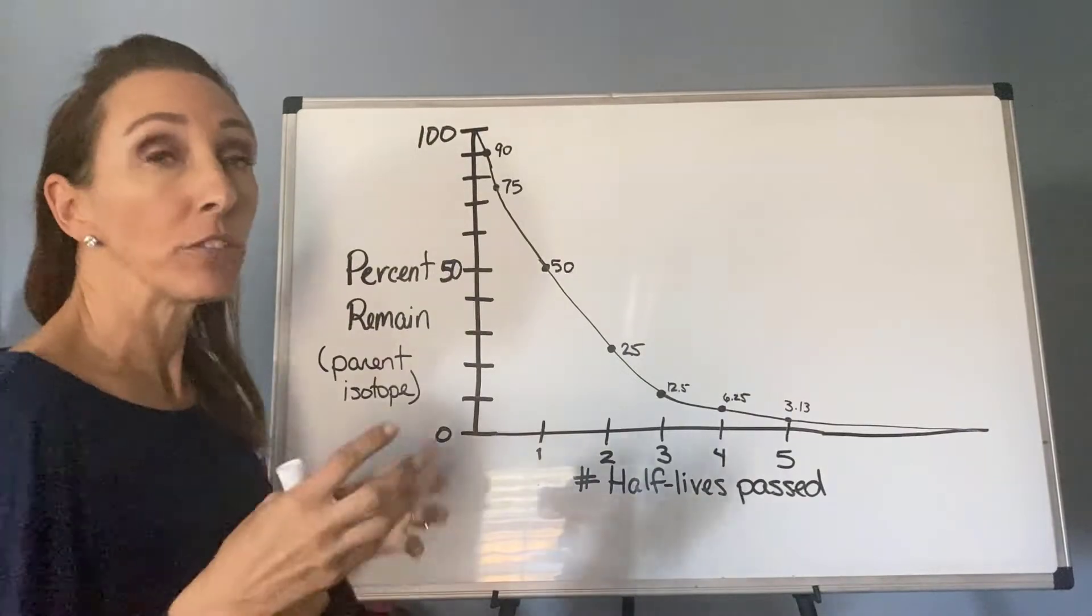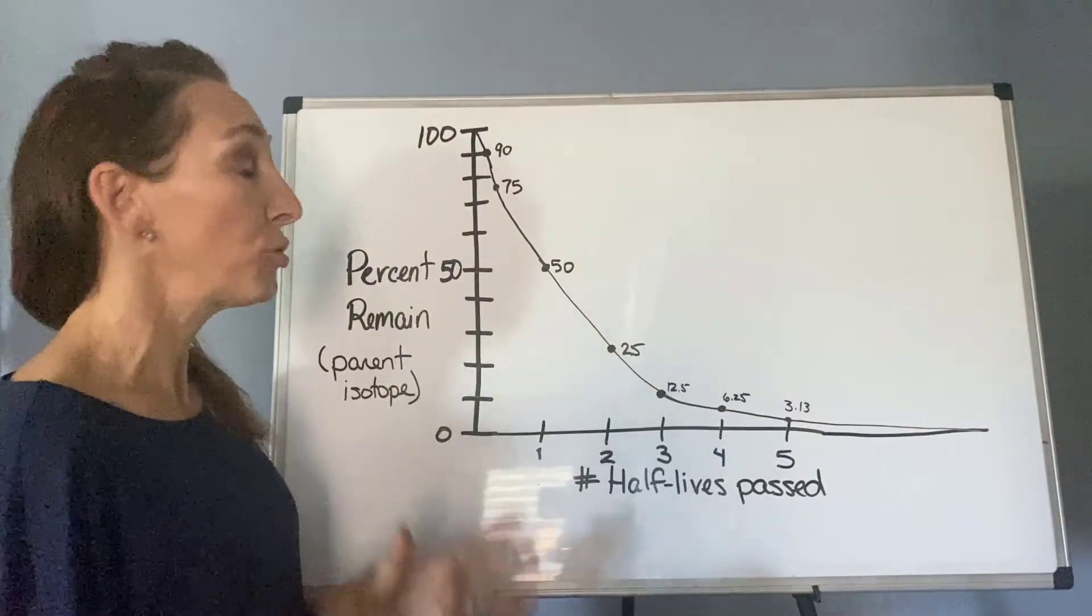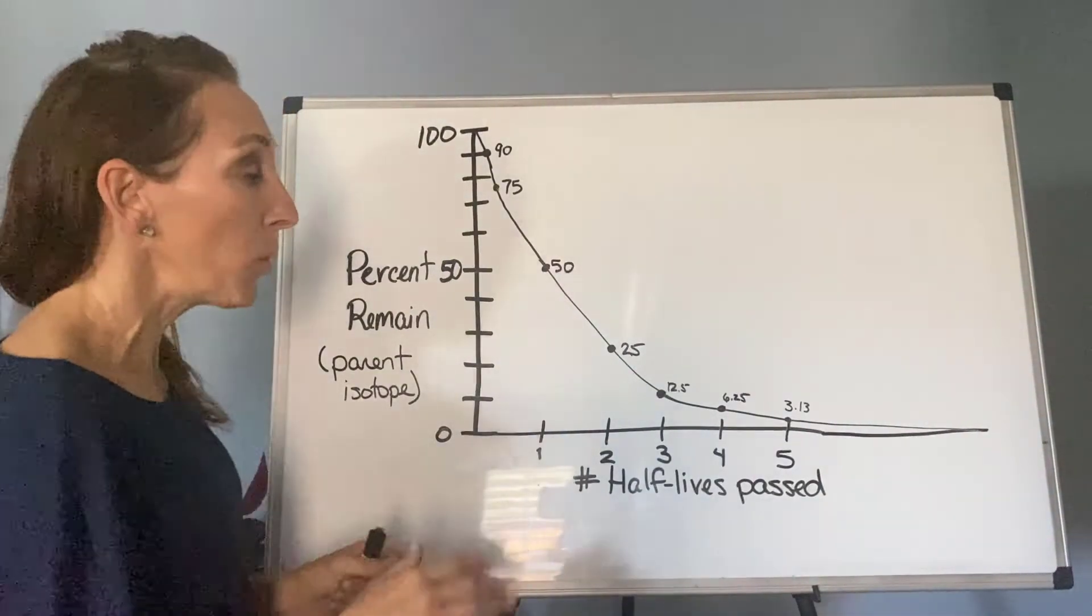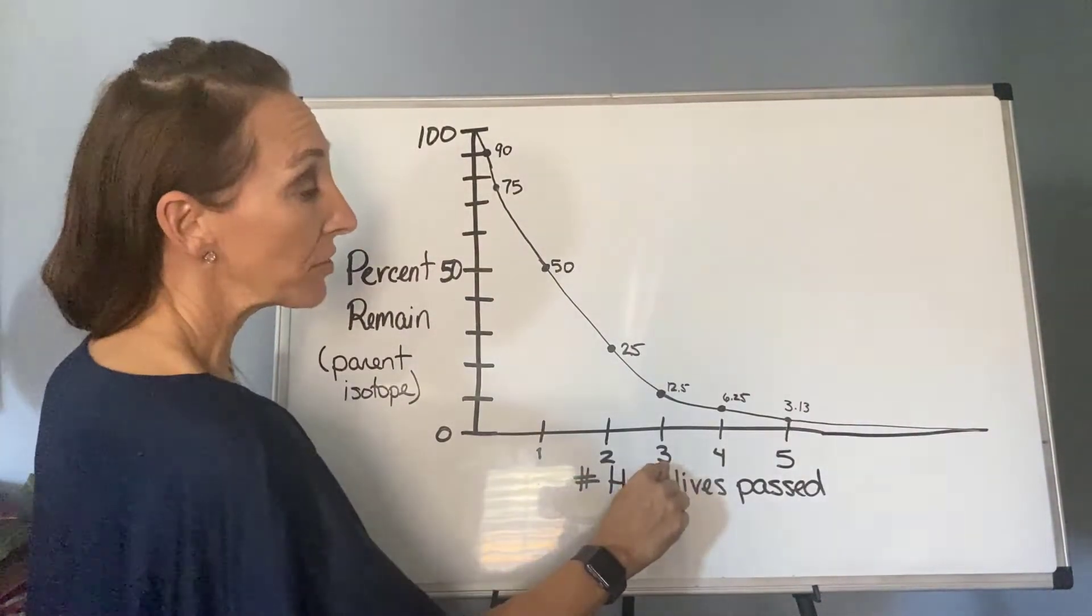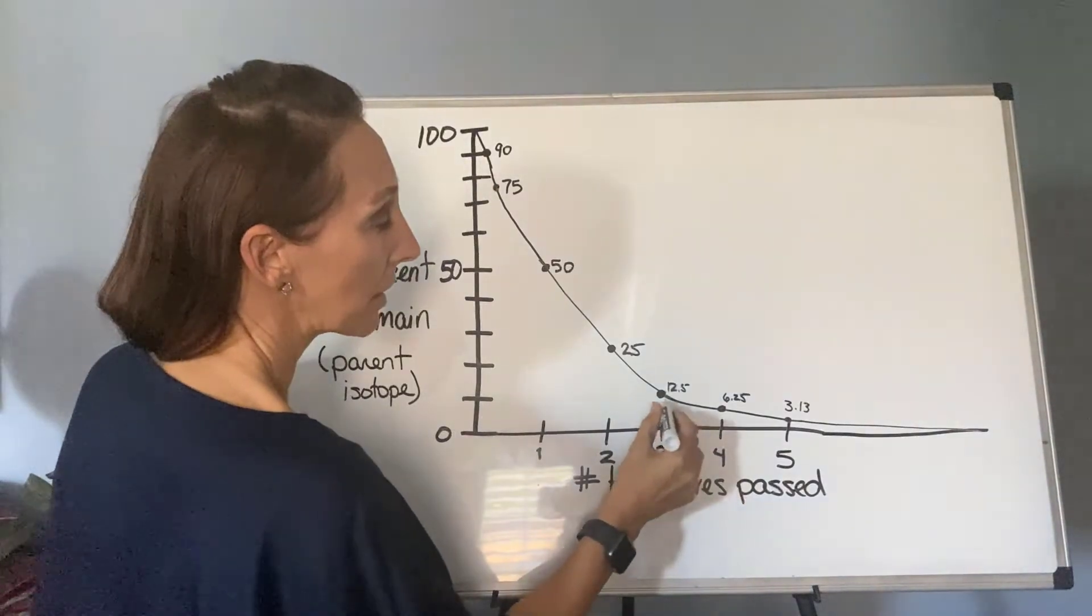All right, so when you're trying to read this graph, there are two ways to go about it. If you know the number of half-lives that have passed - so let's say that three half-lives have passed - what you would do is come up here and say,